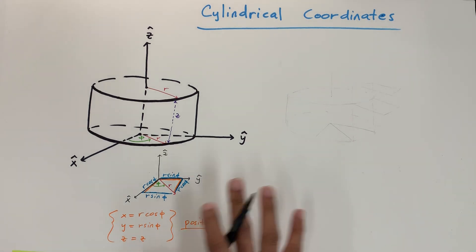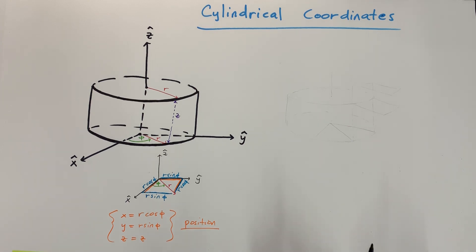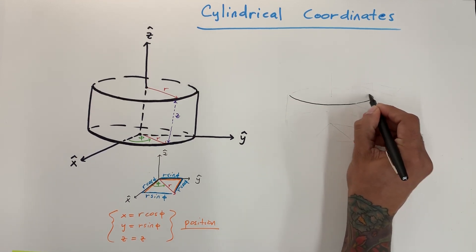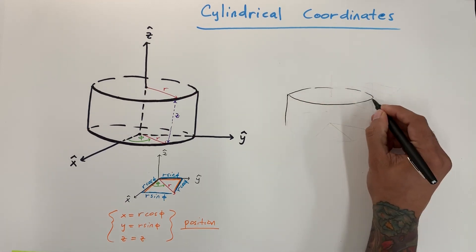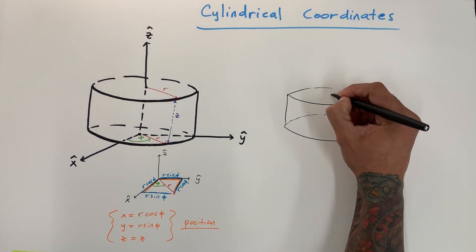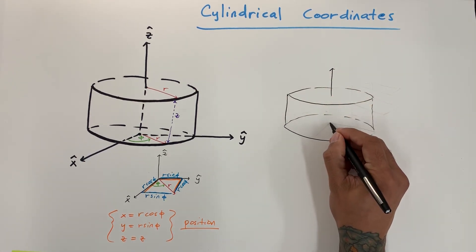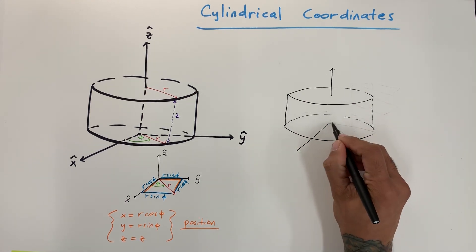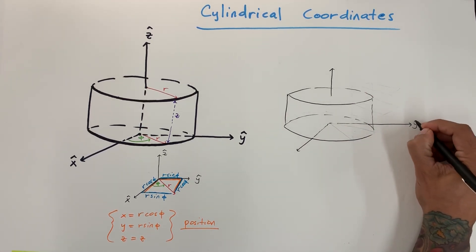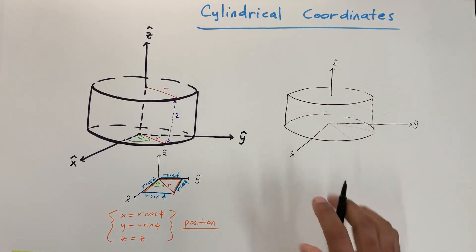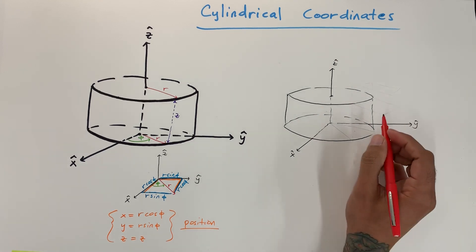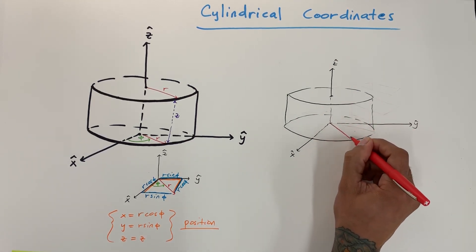Now let's take a look at a volume element in cylindrical coordinates. I'm going to draw this cylinder and, same as before, we're just going to identify a volume element that we can use for integration requiring three integrals — a volume integral, a 3D image basically. This is our cylinder.